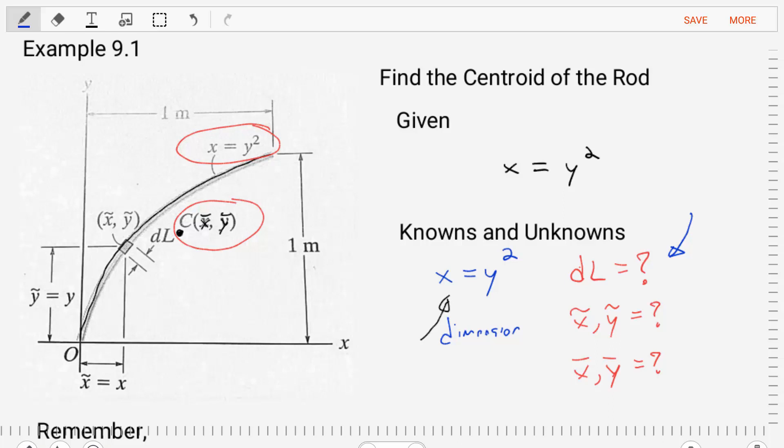The first unknown is the differential length, a little sub-element that we're going to integrate over to find the centroid locations. That differential length also has its own centroid, its own central position. So we need to find the x-tilde and y-tilde for that differential length. And then finally, we need to do some calculus to find the x-bar and y-bar position.